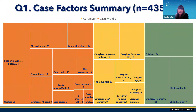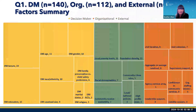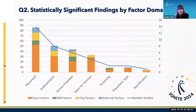Turning to those factors, we illuminate the complexity of variables explored across studies. Looking first at case factors, there were a total of 435 independent variables, of which 28 were unique, explored across studies. As shown here, the majority of these factors were case or family-level variables. For the sake of brevity, the remaining three DME factors are summarized here. Caseworker demographics comprise the majority of decision-maker factors explored, while organizational culture and community demographics made up the bulk of organizational and external factors, respectively.